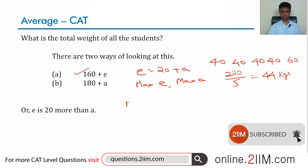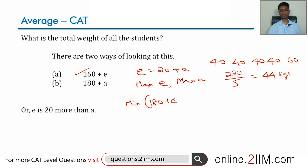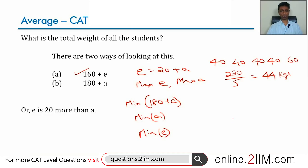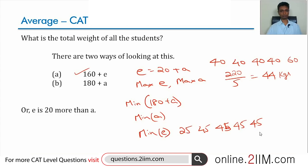Now for the minimum: the total is 180 plus a, so the minimum average occurs when a is at its minimum, which means e must be at its minimum. Since e is the heaviest among the top four and their average is 45, the minimum value e can take is 45. In that case d, c, and b are also 45, and a is 20 less than e, which is 25.